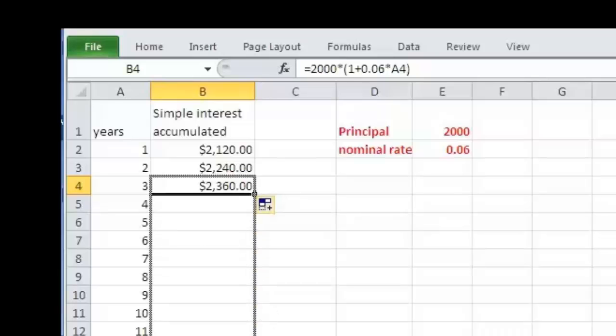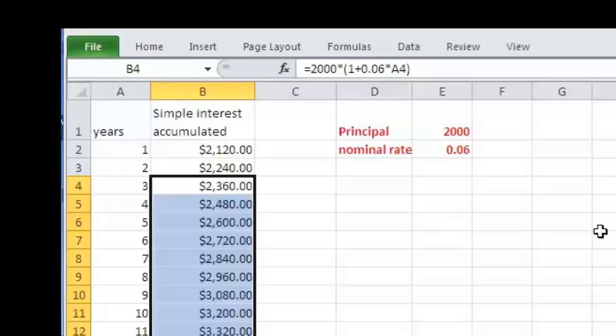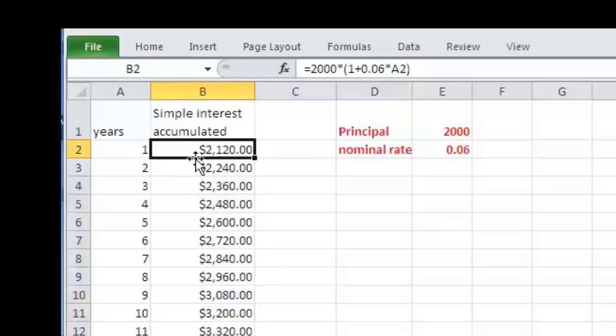So if we continue that down, let's say for 20 years, we have a schedule for simple interest. We now know what the account balance will be at the end of each year in that 20 year period of time. That's fine. We're fixed now for $2,000.